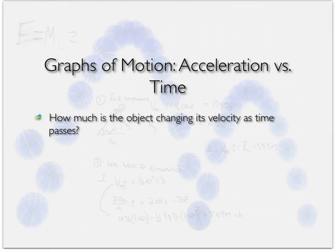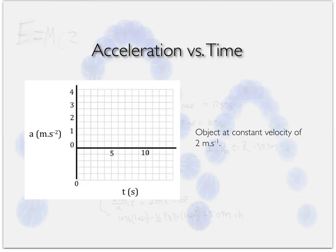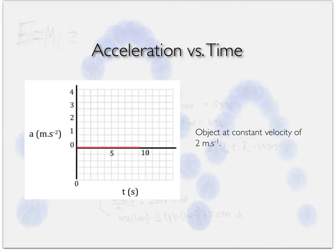A brief note on acceleration-time graphs — these are by far the simplest. They are either positive, negative, or zero, and are always horizontal flat lines. For an object at constant velocity of two meters per second: the acceleration is zero, since velocity hasn't changed at all. It couldn't be simpler. Acceleration is just how much velocity has changed per unit time, and if velocity is constant, acceleration is zero.